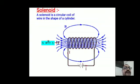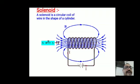Now, before Activity 3, you should know about the solenoid. In the diagram, a large number of circular turns form a cylinder shape — that is called the solenoid. Take a straight wire, convert it into a large number of circular turns; when it forms a cylinder-type structure, that is called the solenoid. Both ends of the solenoid can be connected to a battery, plug key, and other apparatus.